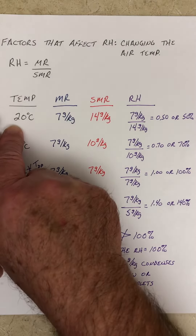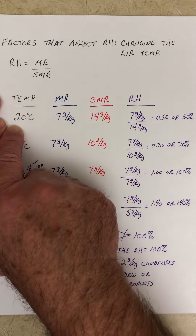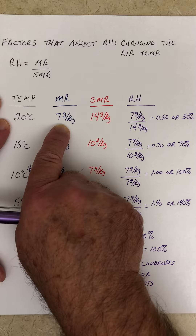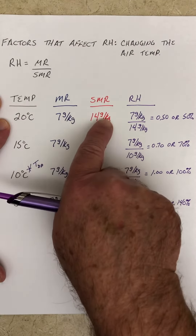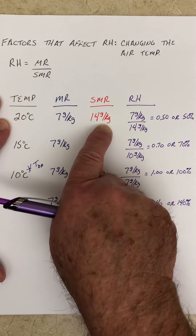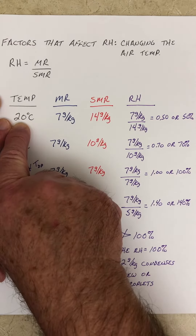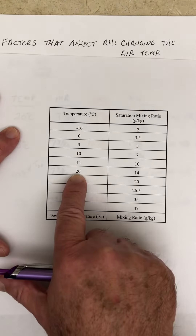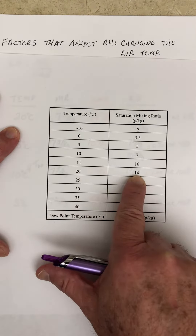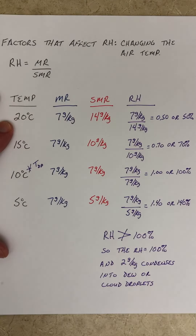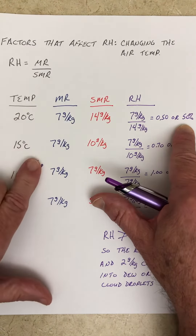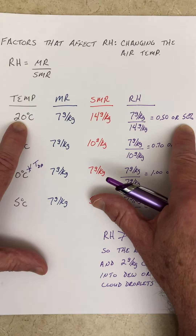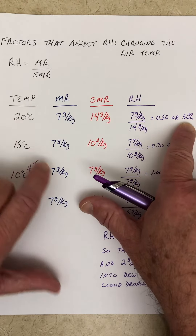In this initial diagram or table, we started off with a temperature of 20 degrees C, a mixing ratio of 7 grams per kilogram, and a saturation mixing ratio of 14 grams per kilogram. Remember, we got that through the temperature — if we know the temperature is 20 degrees C, our saturation mixing ratio is 14 grams per kilogram, and therefore our relative humidity is 50 percent. So is 20 degrees C the dew point? No, because the relative humidity is 50 percent.